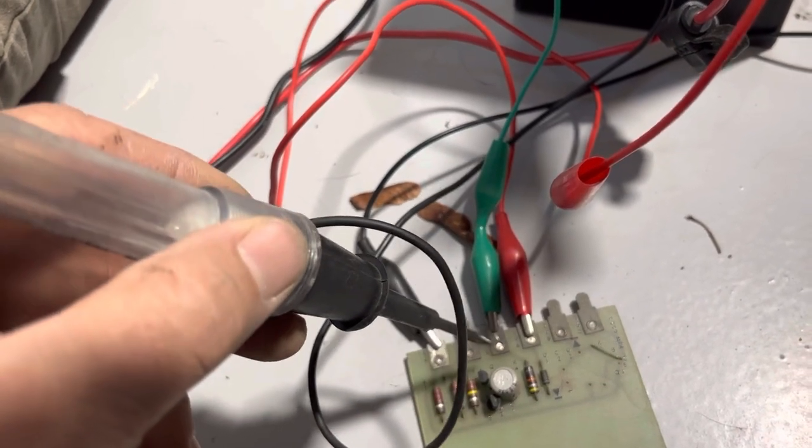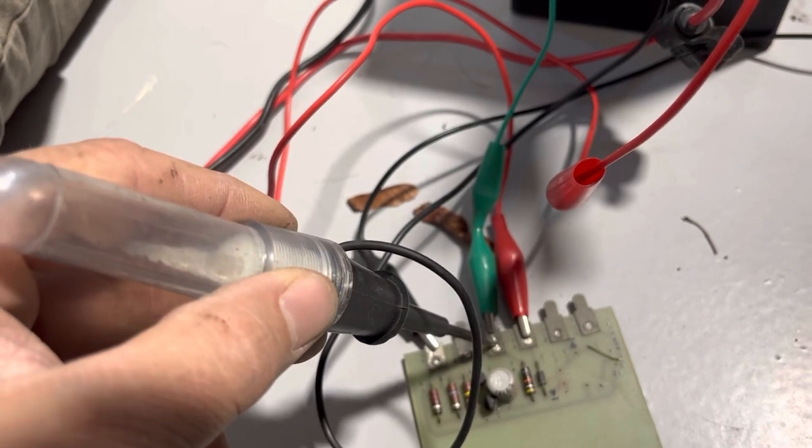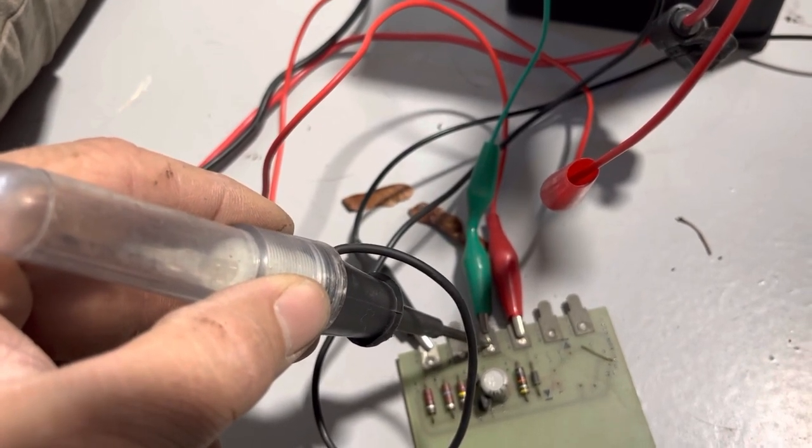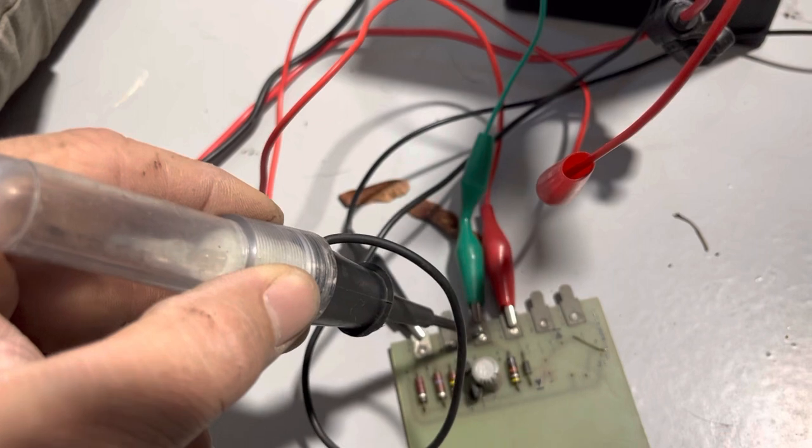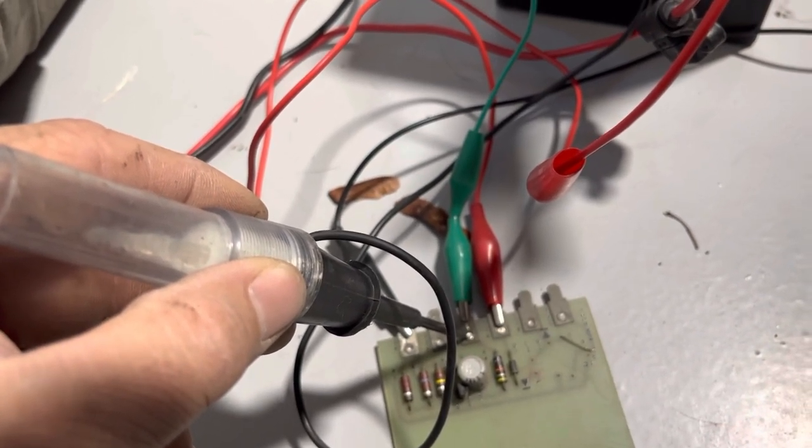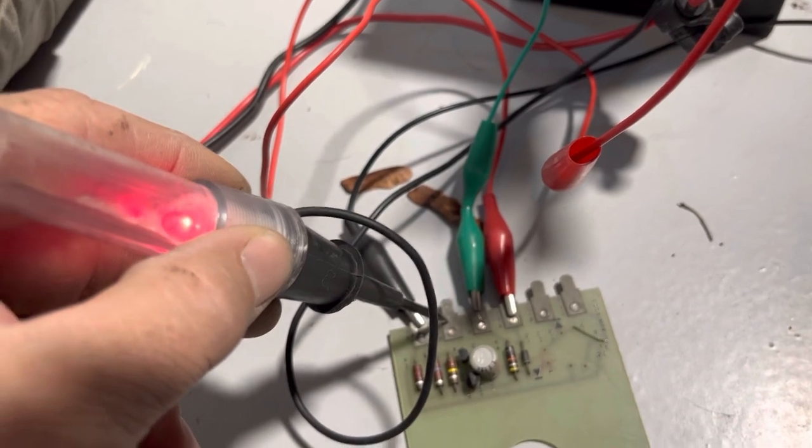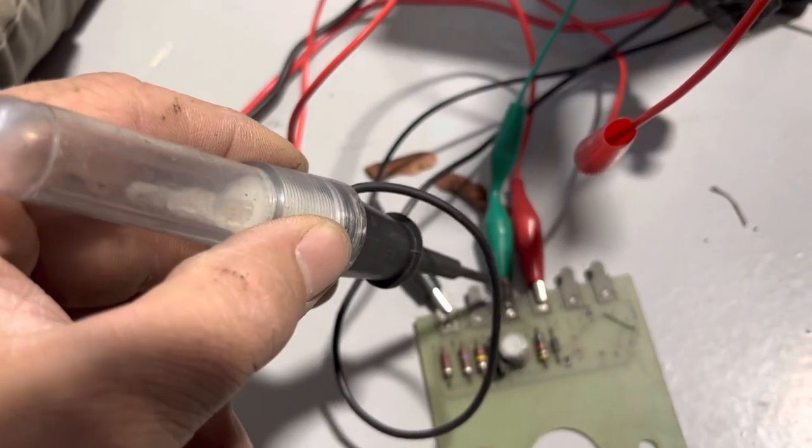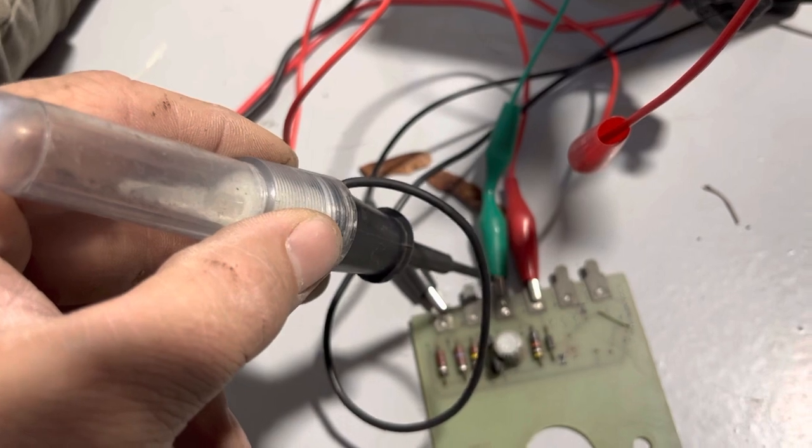And then this is the feed to the motor, which is grounded unless it's hot. And then this is the 12 volt out to the light when this is not grounded, is my understanding.